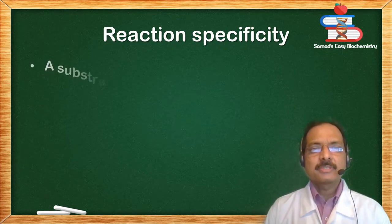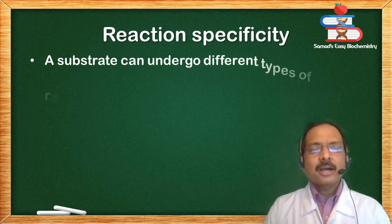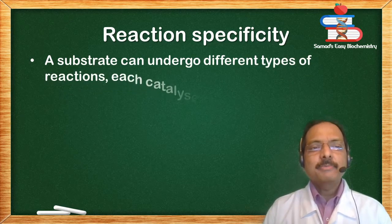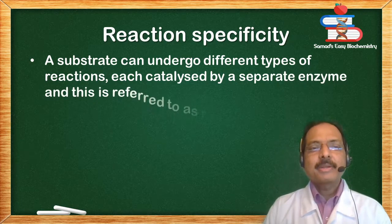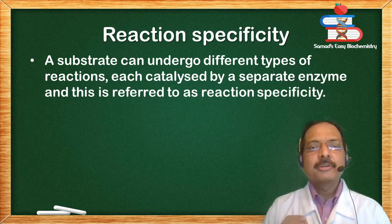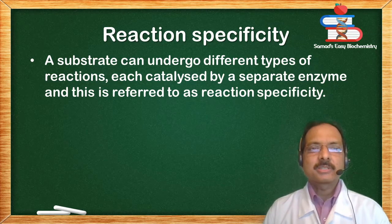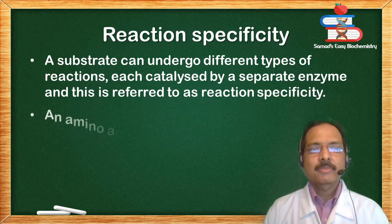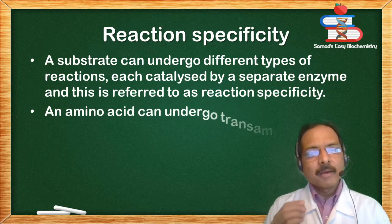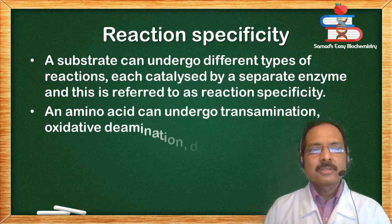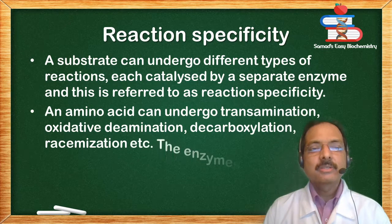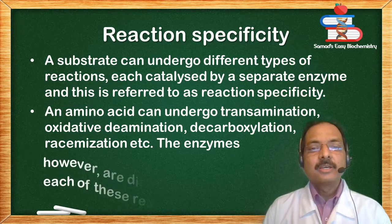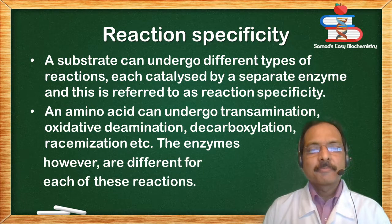Reaction specificity: a substrate can undergo different types of reactions, each catalyzed by a separate enzyme, and this is referred to as reaction specificity. For example, an amino acid can undergo transamination, oxidative deamination, decarboxylation, racemization, etc. The enzymes, however, are different for each of these reactions.